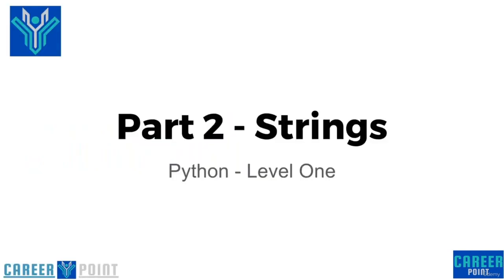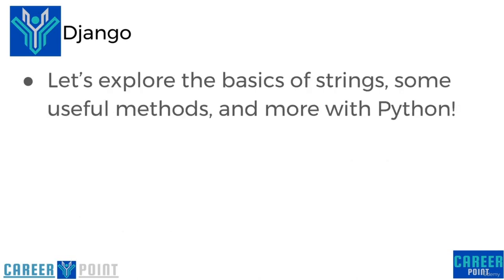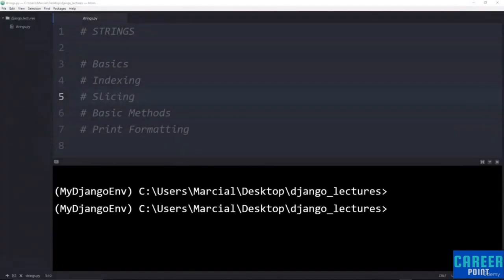Hello everyone and welcome to part two: Strings. Strings in Python are used to hold text information and are indicated with the use of either single quotes or double quotes. They are a sequence of characters, meaning they can also be indexed using the bracket notation. Let's explore the basics of strings, some useful methods, and more with Python. In this lecture we'll cover string basics such as creating and printing strings, string indexing and slicing, basic methods for strings, and how to use print formatting or string interpolation.